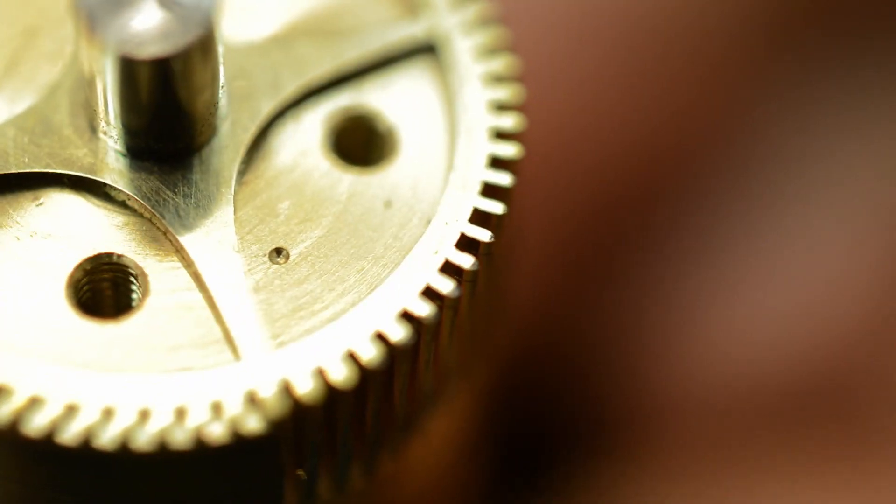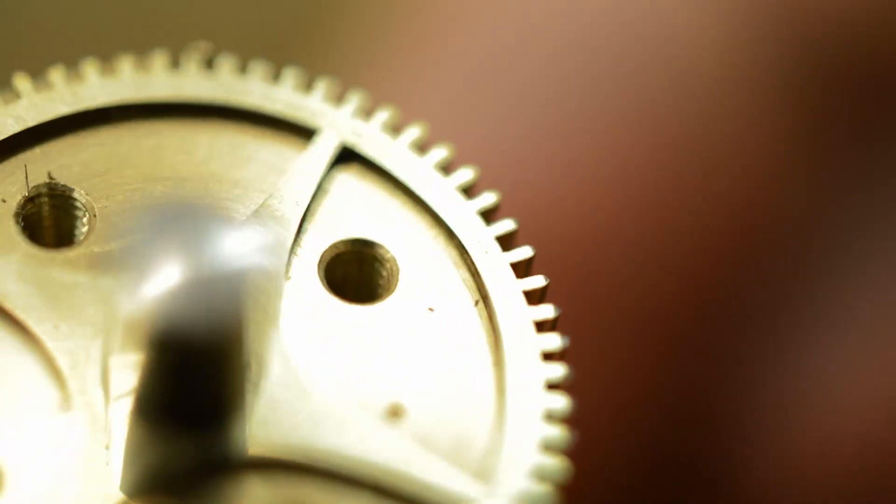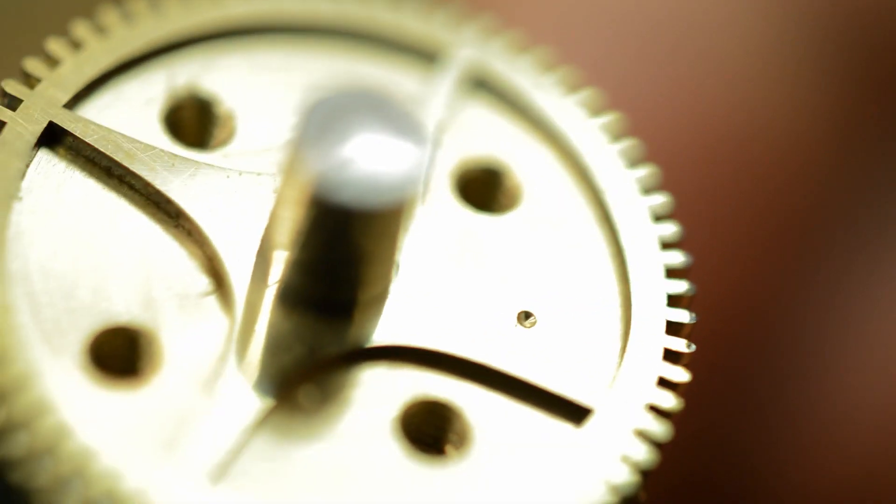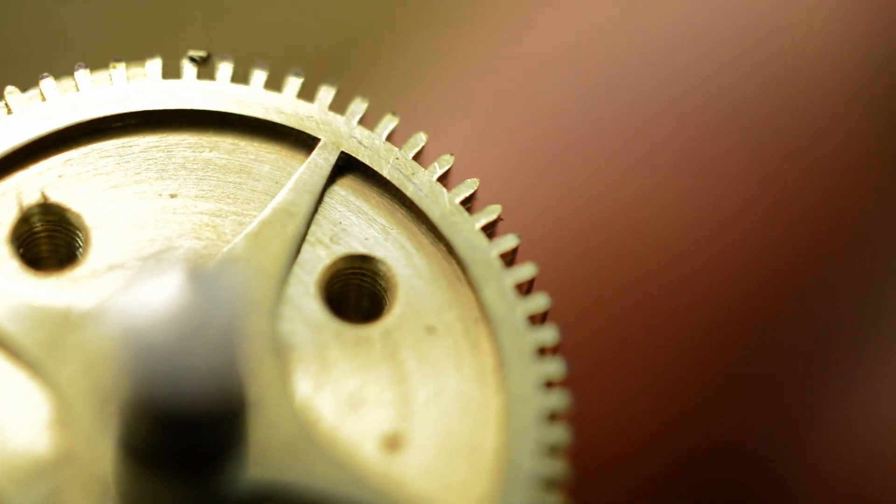And probably as the brass tarnishes over time, it may become a little bit more visible. But I'm not overly concerned by that. It's part of its history now that it's had this repair. And it has saved the original wheel, which is the important thing.